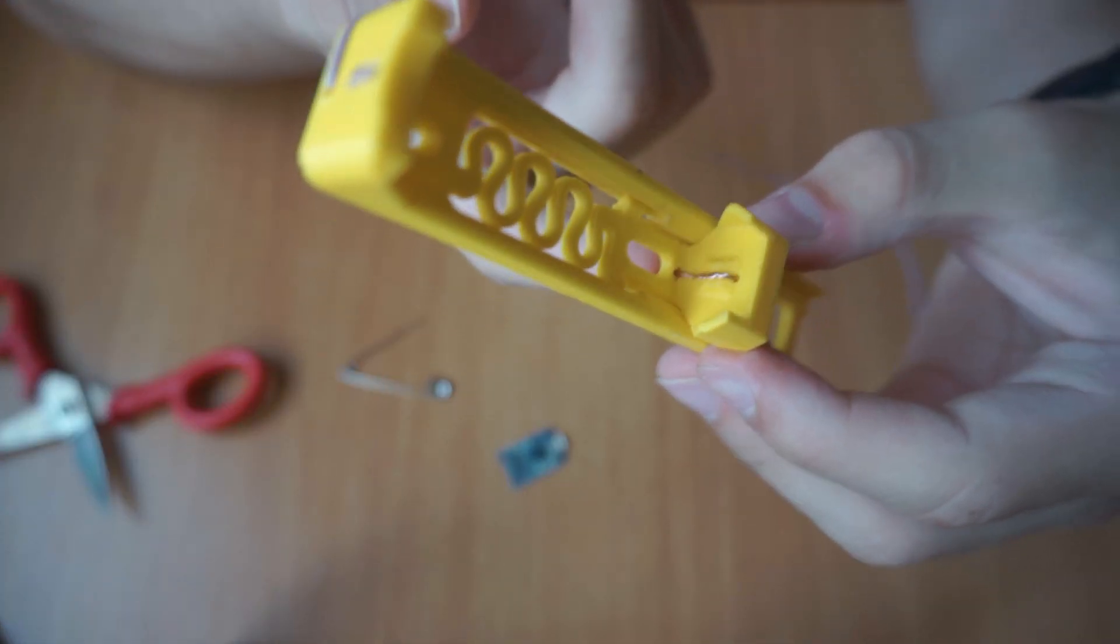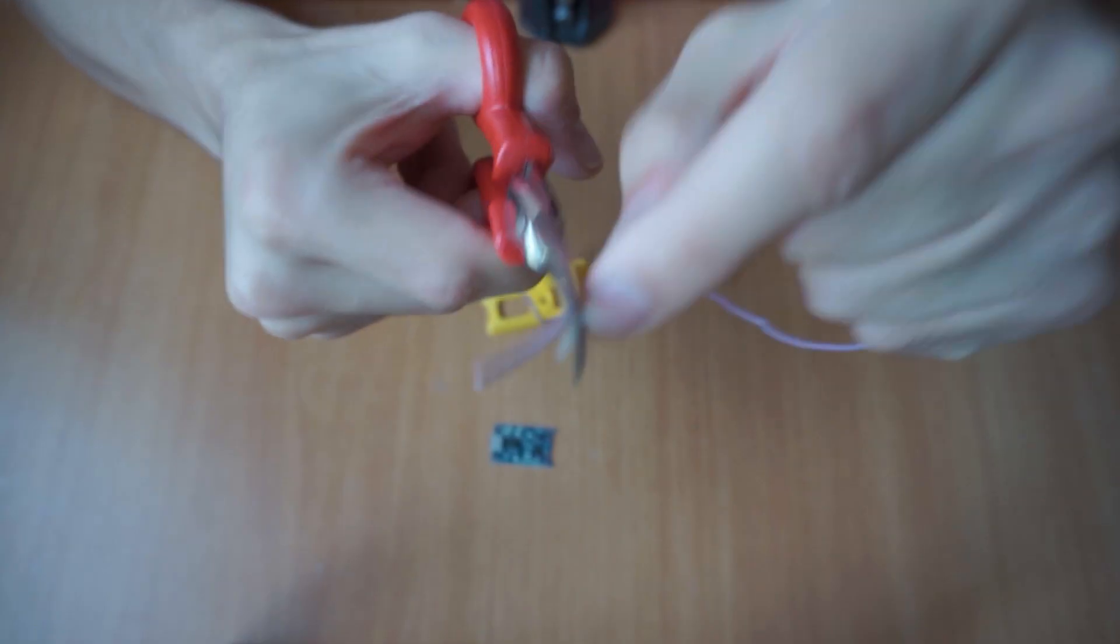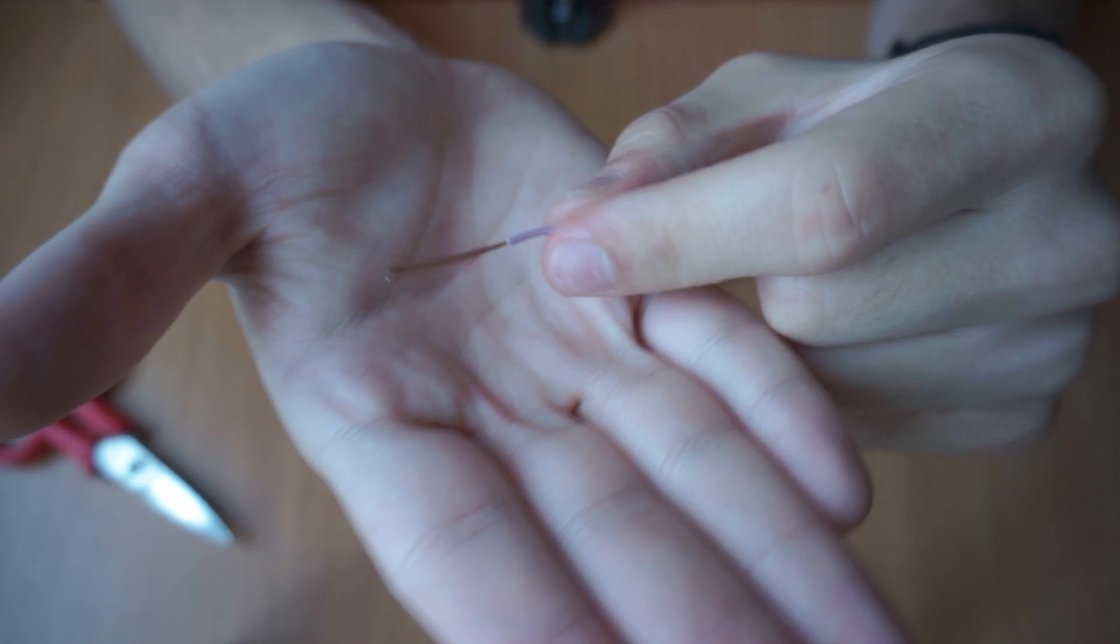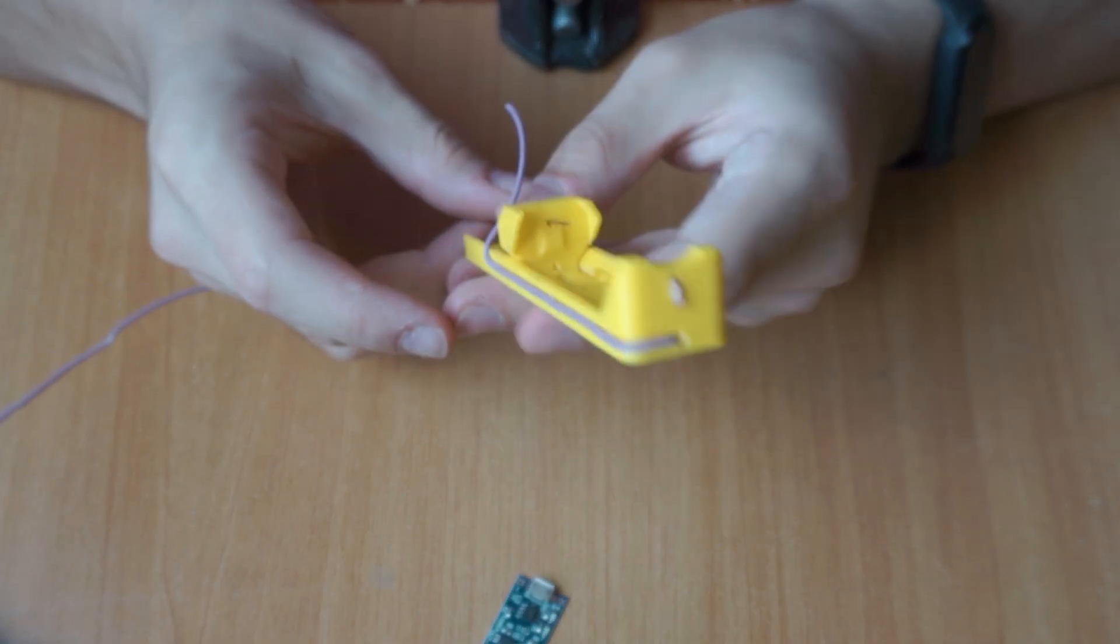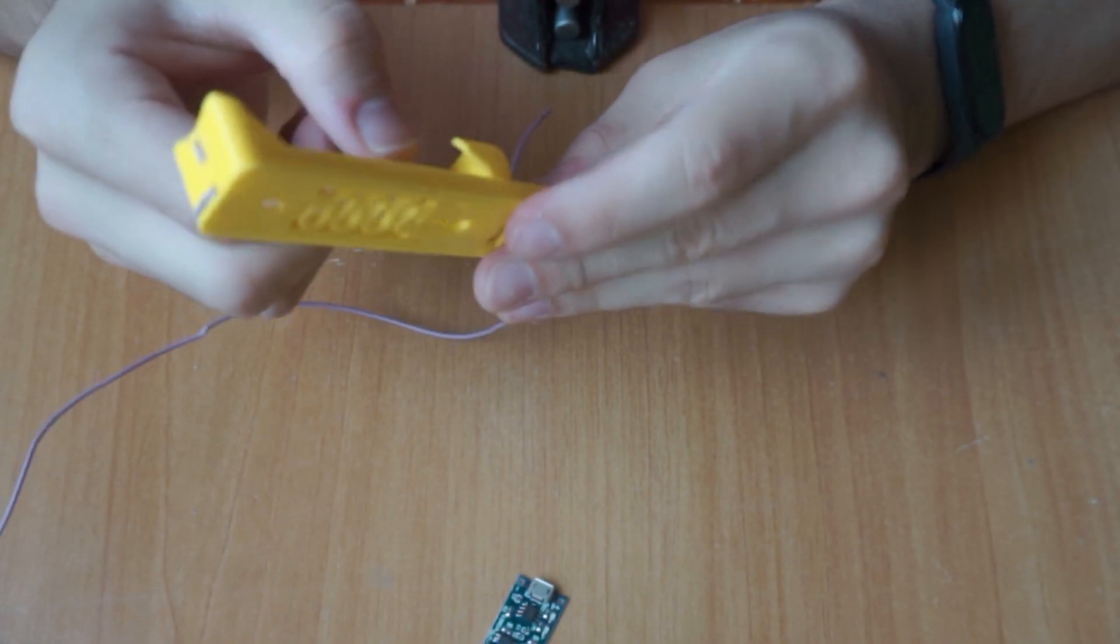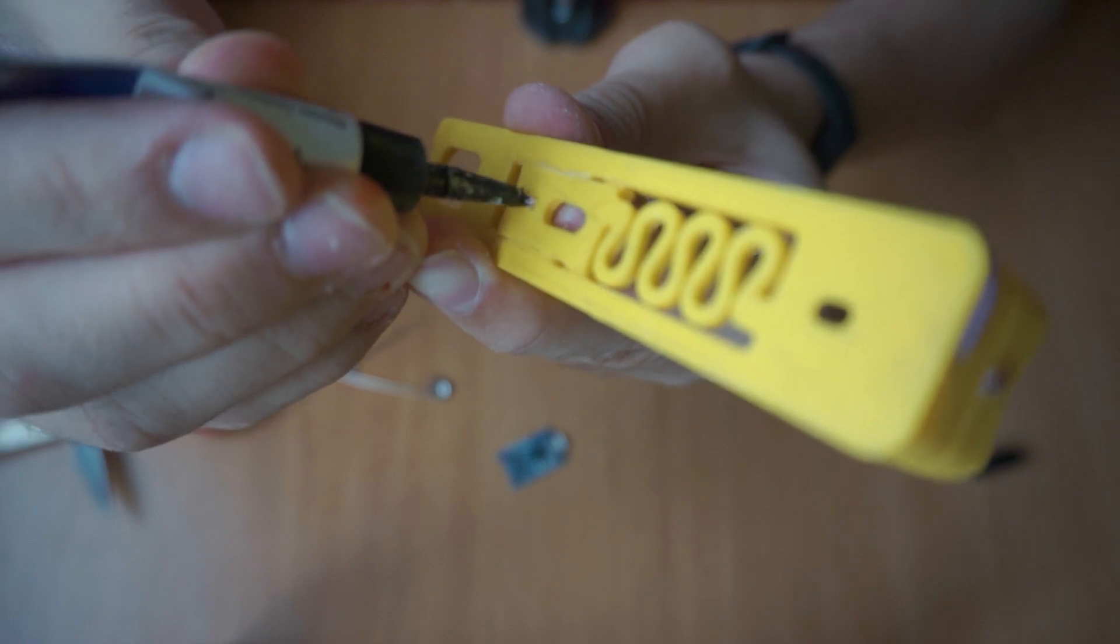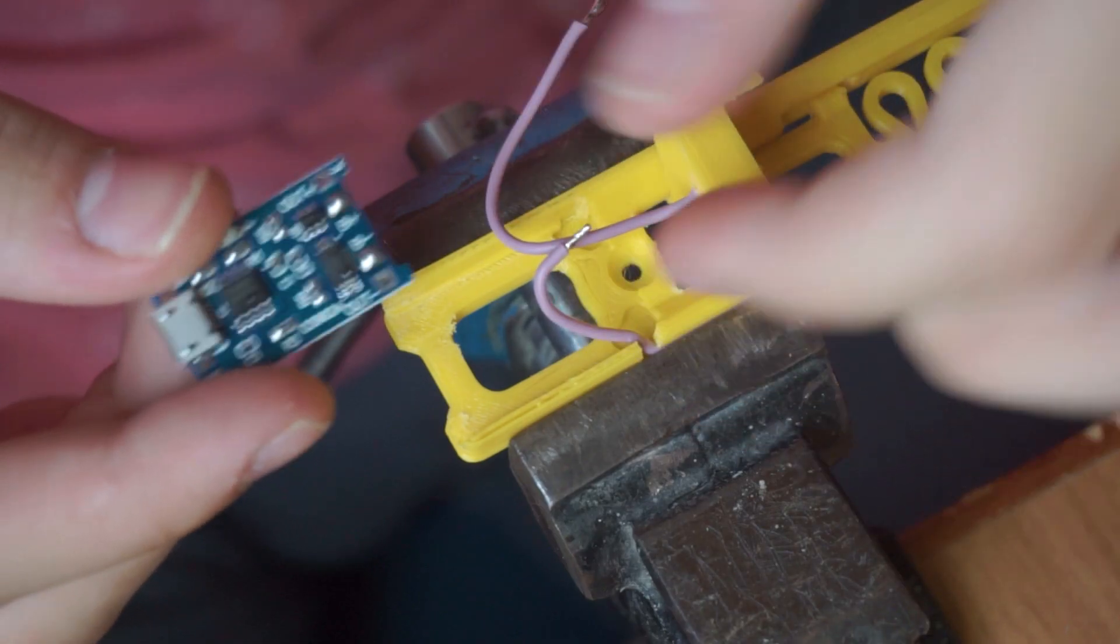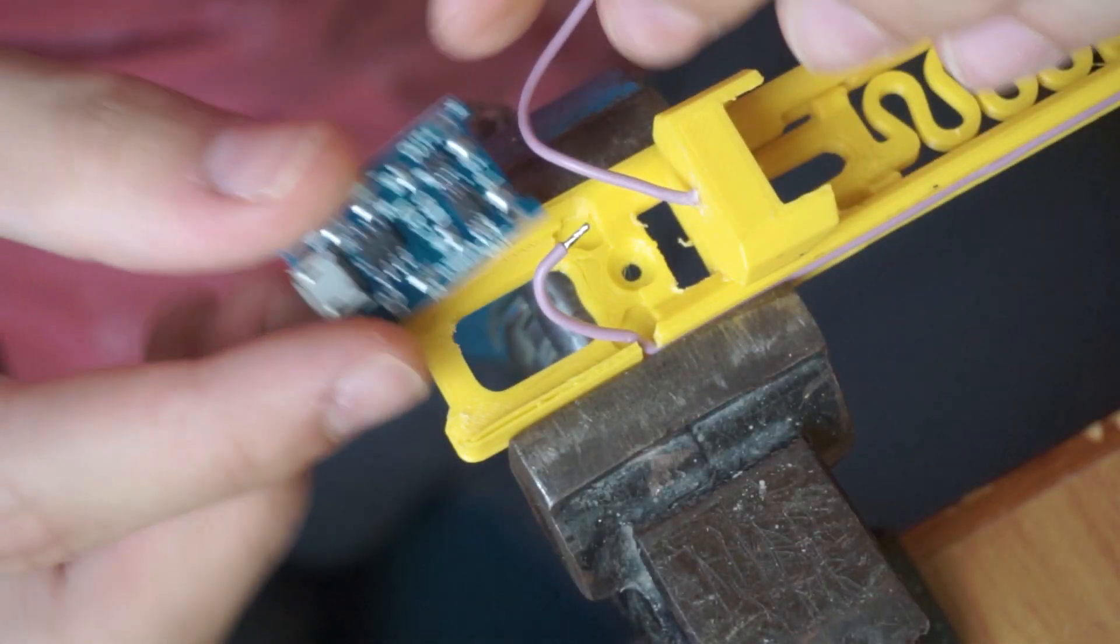The second step is adding the battery contacts. When the piece is printed, strip a copper wire about 3 centimeters and insert it into the holes in the 3D printed piece. The stripped part will be the contacts that touch the battery poles once secured with glue. Once the wires reach the part where the module will be fixed, you can move on to electrical connections.